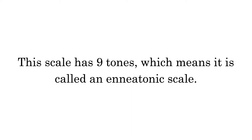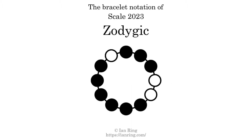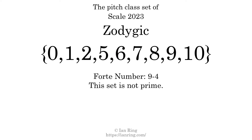This scale has 9 tones, which means it is called an enneatonic scale. This is a bracelet notation diagram of scale 2023. The shaded circles represent tones that appear in the scale, and they are read clockwise, starting at the top. The pitch class set for this scale is 0, 1, 2, 5, 6, 7, 8, 9, 10. The Forte class is 9-4. This set is not prime.